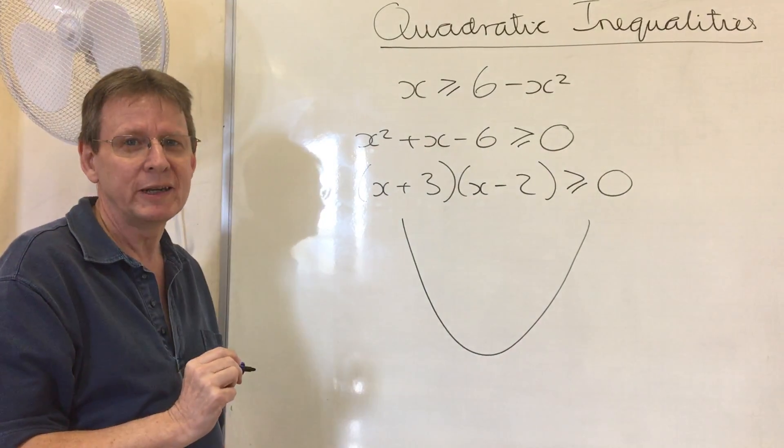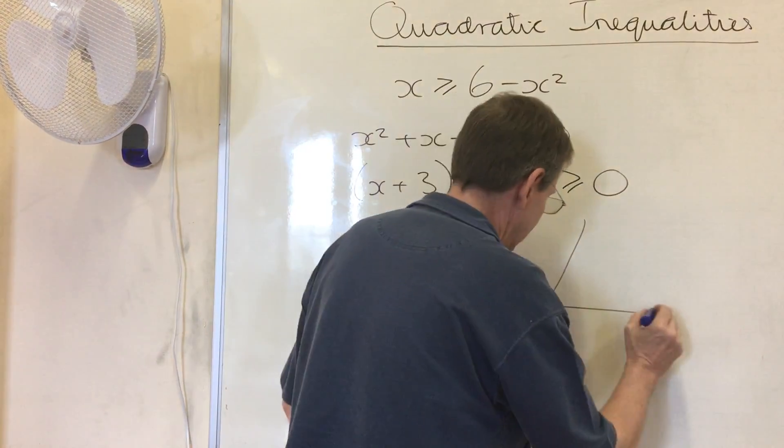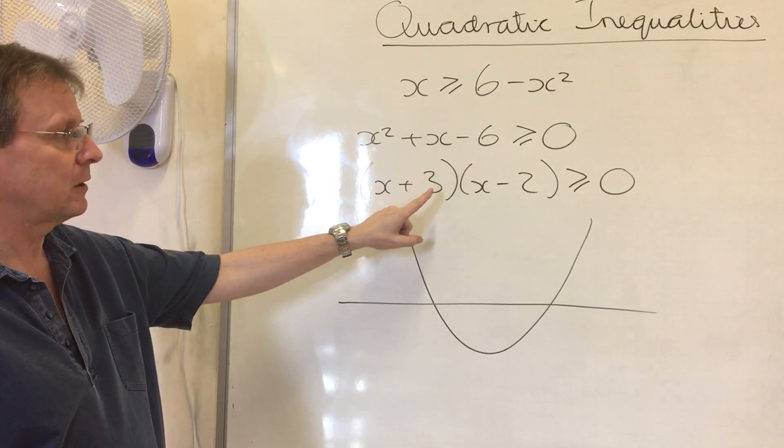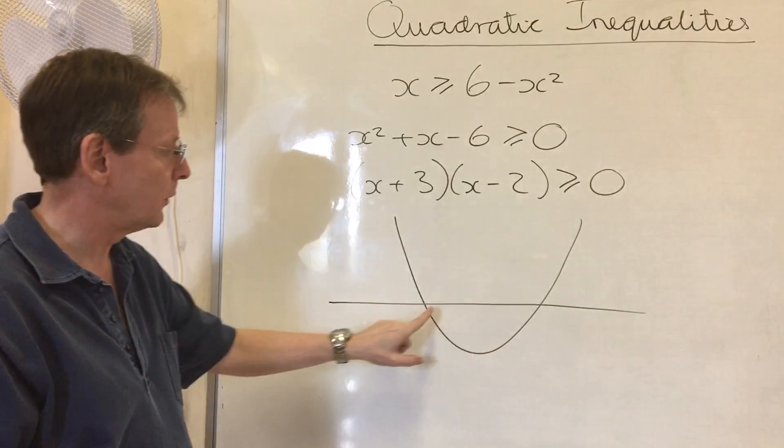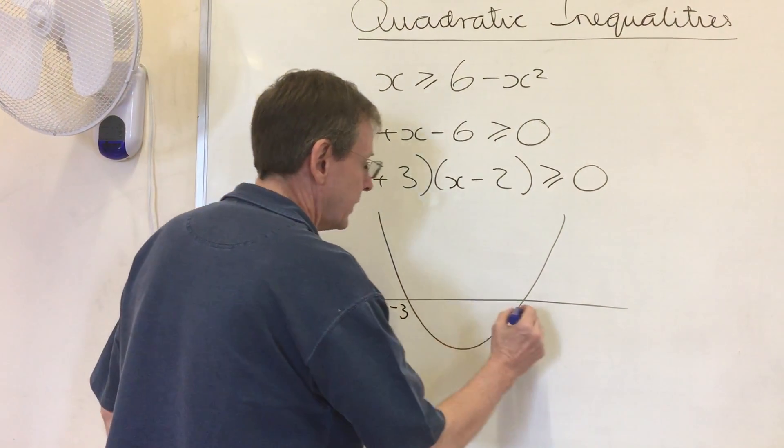Notice, we don't need a y-axis. It really makes no difference. There's my x-axis. And because we have already solved where it's equal to 0, we know the two points where it crosses the x-axis, which will therefore be negative 3 and 2.